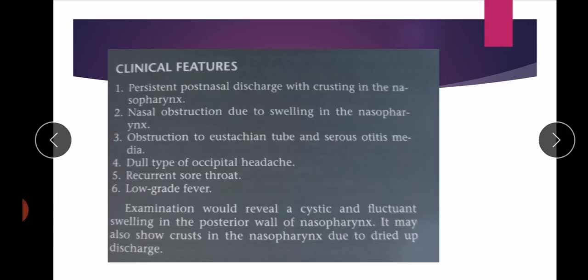The clinical features of Thornwald's disease include: first, persistent post-nasal discharge with crusting in the nasopharynx; second, nasal obstruction due to swelling in the nasopharynx; third, obstruction to the Eustachian tube and serous otitis media, because when the Eustachian tube is blocked, otitis media develops.